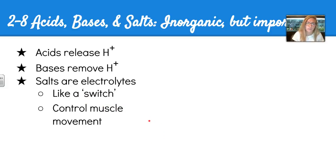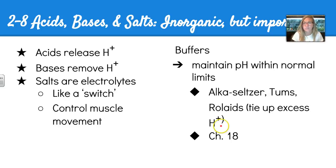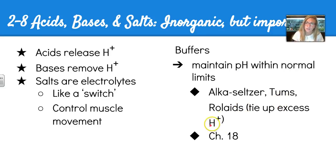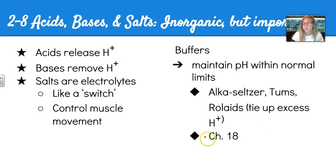We'll talk about acids, bases, and salts in more detail when they come into play in different units. We also have buffers, which maintain pH within normal limits. We can take things like Alka-Seltzer, Tums, and Rolaids to tie up excess hydrogen ions when our stomachs become too acidic. There is more information in Chapter 18 about buffers, and we'll cover that when we get to the digestive and urinary systems.